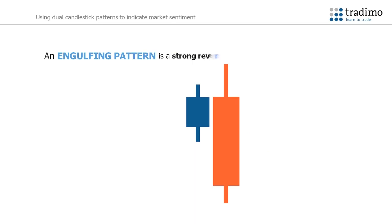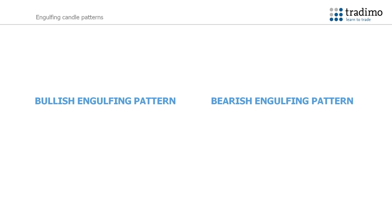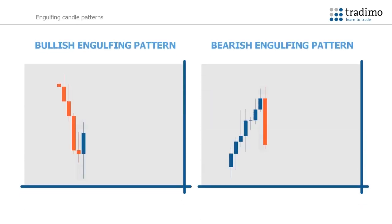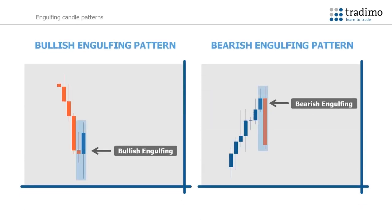An engulfing pattern is a strong reversal signal made up of two candlesticks. There are two types: a bearish engulfing pattern and a bullish engulfing pattern. There are three main characteristics for spotting these patterns. First, the market must not be ranging — there has to be an uptrend or downtrend preceding the pattern, even if it is short term.